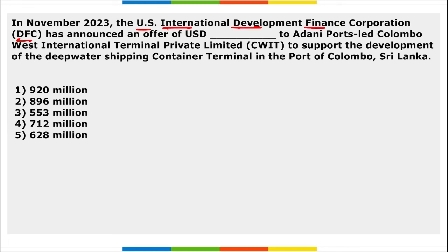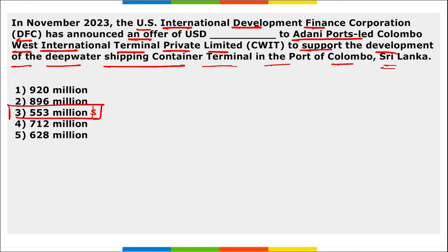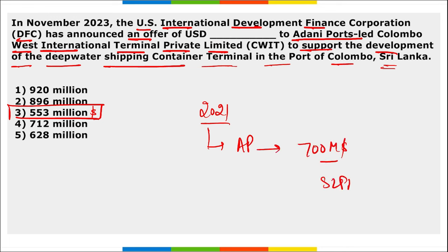Next: the US International Development Finance Corporation announced an amount of 553 million dollars to Adani Ports-led Colombo West International Terminal Private Limited to support the development of deep-water shipping container terminals in the Port of Colombo, Sri Lanka. Also remember that in 2021, Adani Ports signed a 700 million dollar deal with SLPA to develop the terminal project in a build-operate-transfer arrangement for the next 35 years.